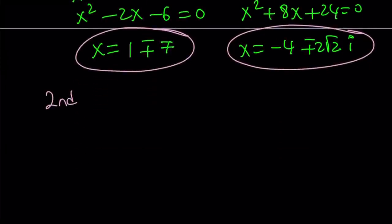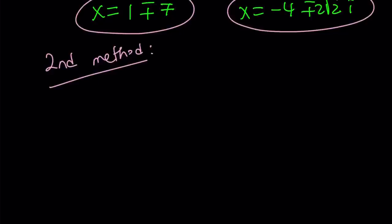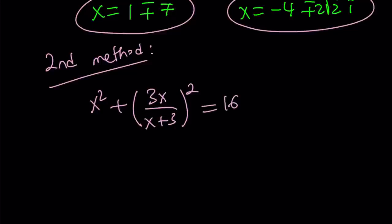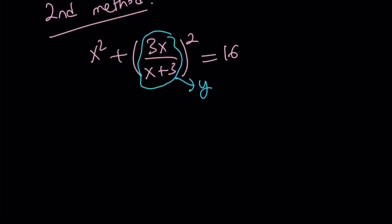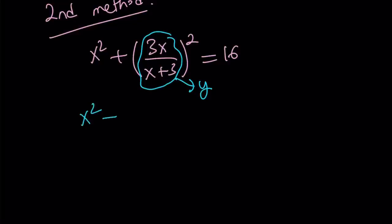Let's go ahead and take a look at the second method. For my second method, I'm going to approach this from a definitely different angle. Let's write it as a sum of 2 squares just like before. And then here we're going to use the power of substitution — we use substitution a lot in the videos. How about calling this expression y? So once you do that, you're going to get something that's much simpler: x squared plus y squared equals 16. And as you know, this is the equation of a circle whose center is at the origin.